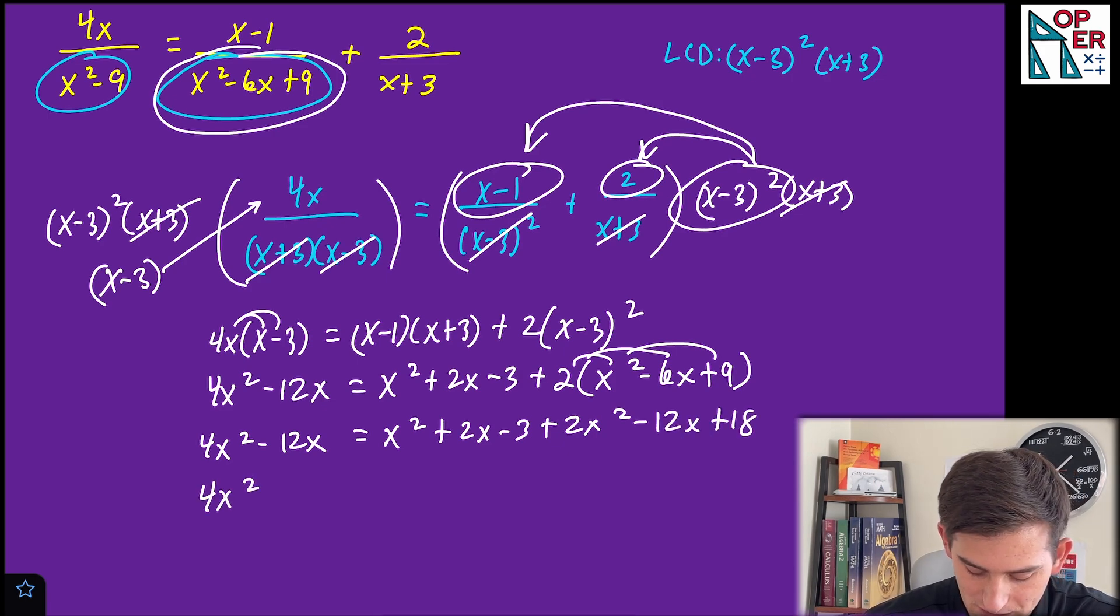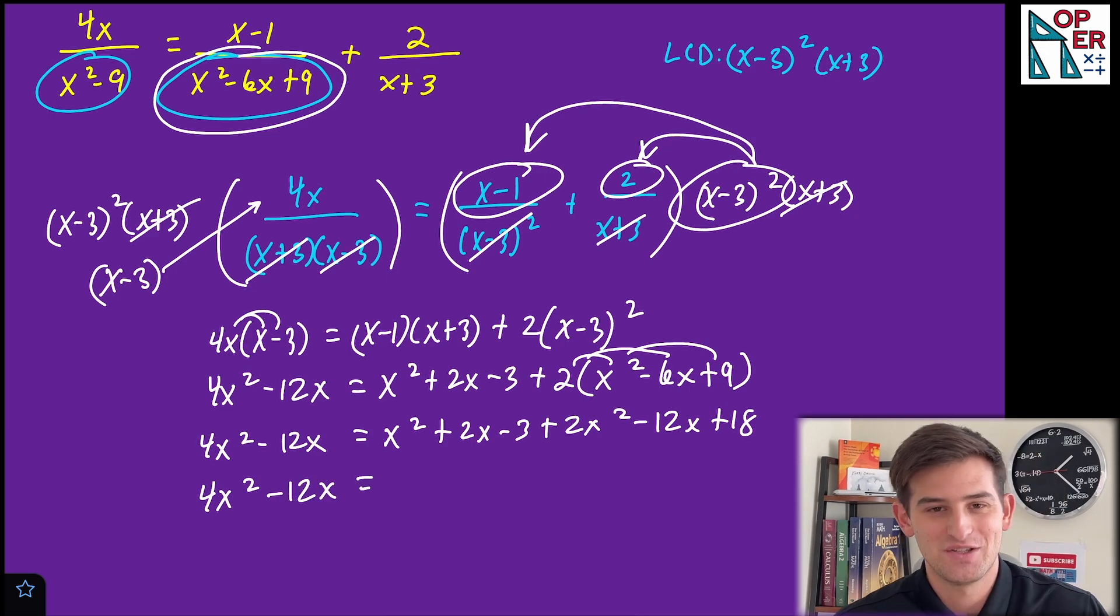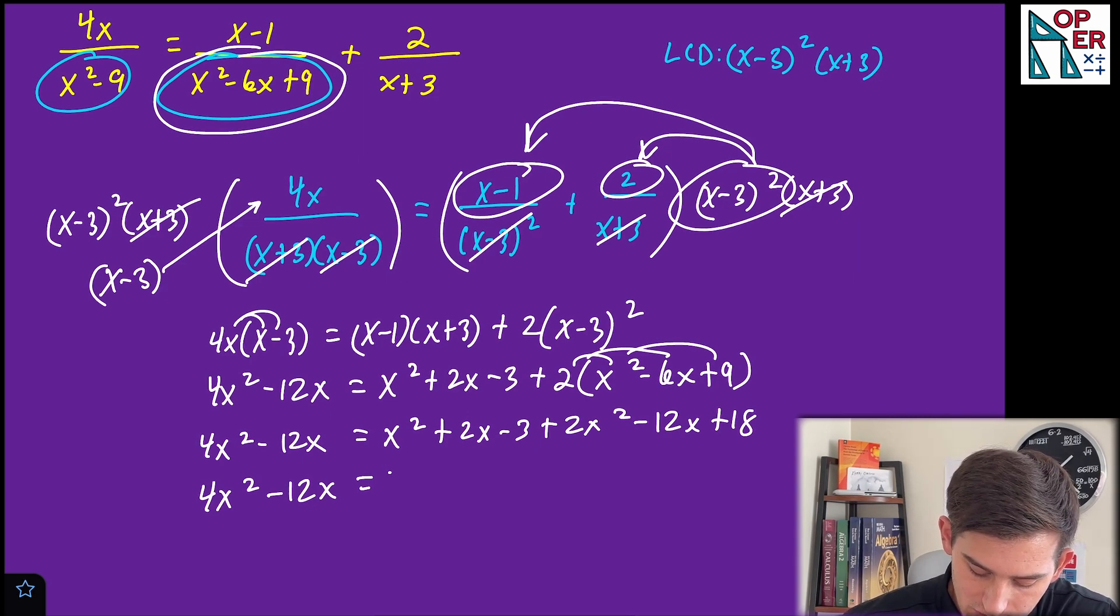Now let's distribute this two. So plus two X squared minus 12X and plus 18. Once again, four X squared minus 12X on the left side. As you can see, I'm going step by step here, but you could condense some of these steps and do them at the same time. We have one X squared and two X squared, so that'd be three X squared. We have a two X and a negative 12X, so minus 10X. We have a negative three and an 18, so plus 15.